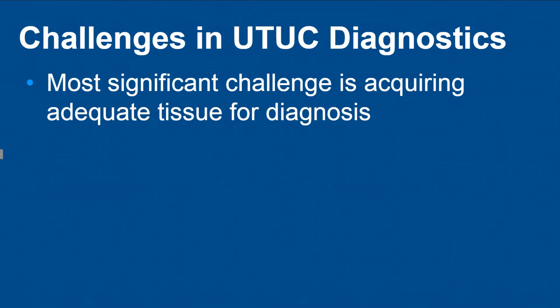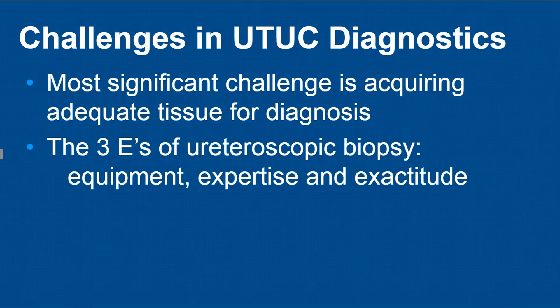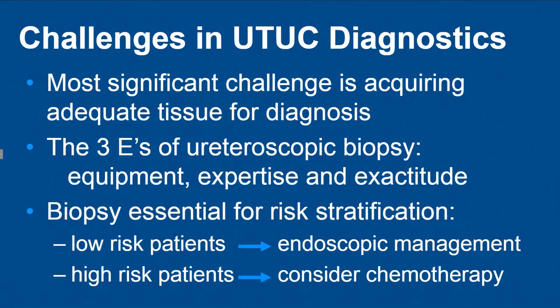In summary, there are significant challenges in upper tract diagnostics and the big issue is getting adequate tissue for diagnosis. The three E's of biopsy: you need optimal equipment, you need the expertise to do it regularly, and you need exactitude — meticulous attention to detail to get the best possible tissue for diagnosis and risk stratification. Risk stratification is important in upper tract disease — it's not all about doing a nephroureterectomy. In low-risk patients we want to spare the kidney and manage endoscopically, and in high-risk patients we want to consider neoadjuvant chemotherapy before nephroureterectomy.